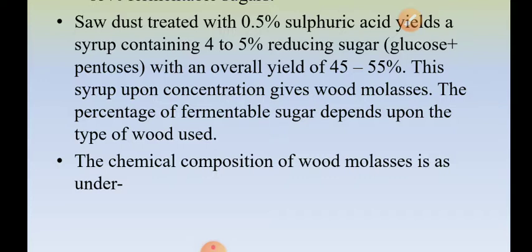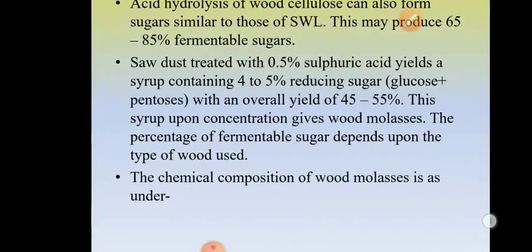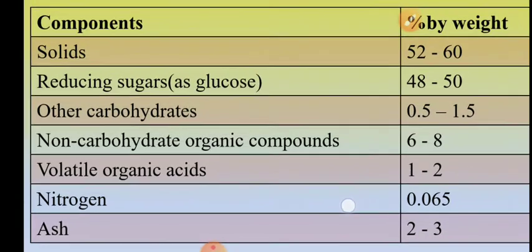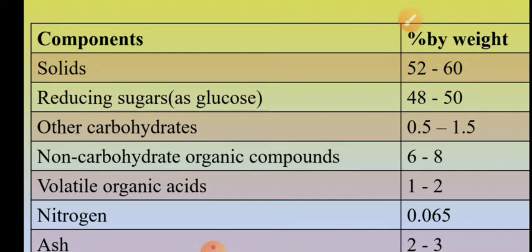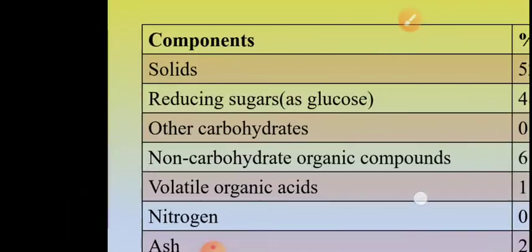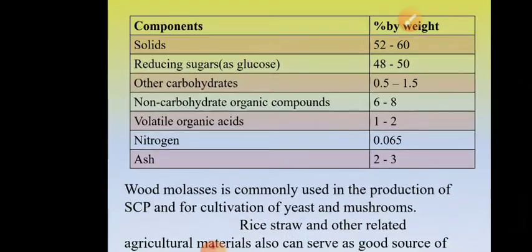The percentage of fermentable sugars in wood molasses depends upon the type of wood used. The average chemical composition of wood molasses is: total solids 52 to 60% by weight, reducing sugars like glucose 48 to 50%, other carbohydrates 0.5 to 1.5%, non-carbohydrate organic compounds 6 to 8%, volatile organic acids 1 to 2%, nitrogen 0.065%, and ash 2 to 3% by weight.